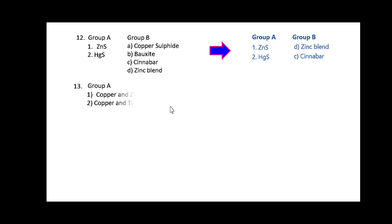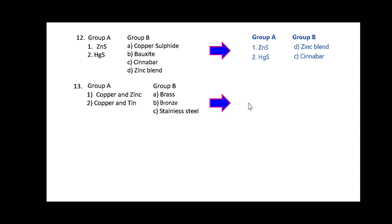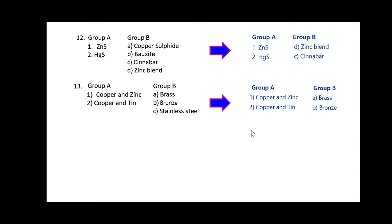Question 13: in group A copper and zinc, and copper and tin are given. Their alloy names are given in group B. The match is: copper and zinc is brass, and copper and tin is bronze.